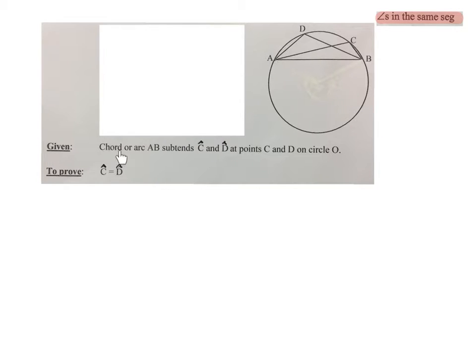The question reads: you are given a chord or arc AB subtended by angles C and D at points C and D on circle O. You have to prove that angle C is equal to angle D. In other words, the angles with the red dots that I wrote in there. Whatever comes next is what you should write while proving it.